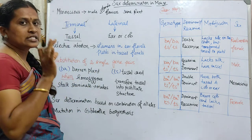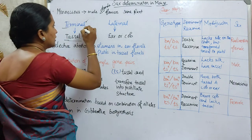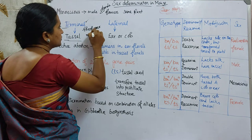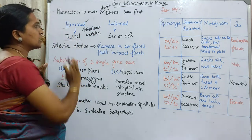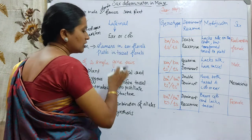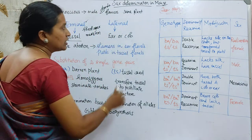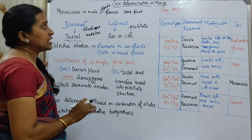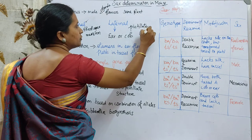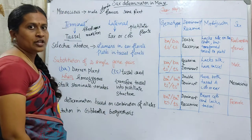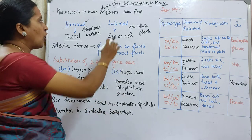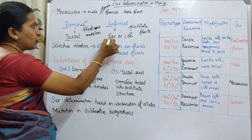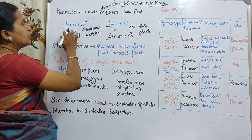As the word 'terminal' suggests, it develops from the shoot apical meristem. The lateral inflorescence develops into pistillate florets, and we call this the ear or cob.